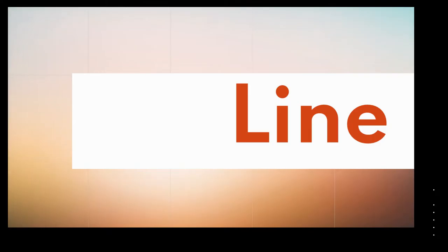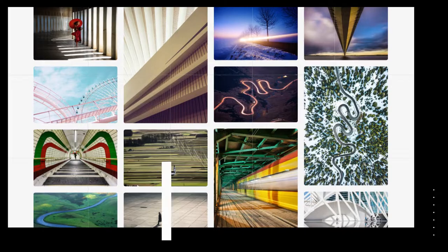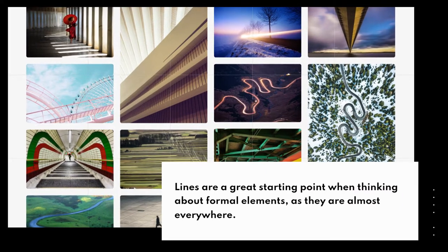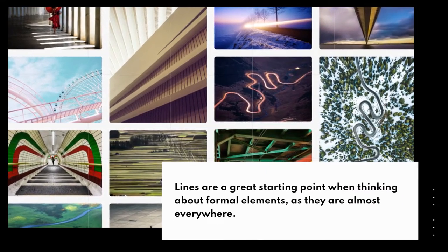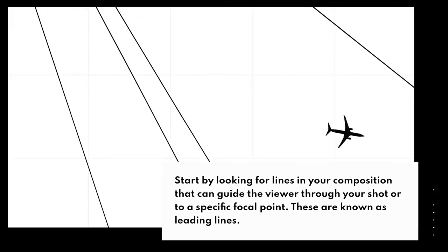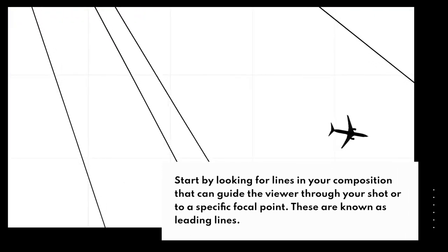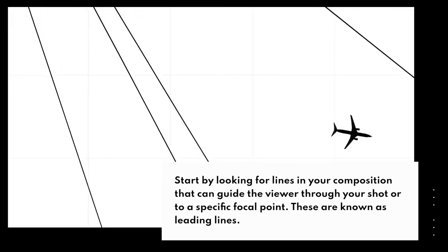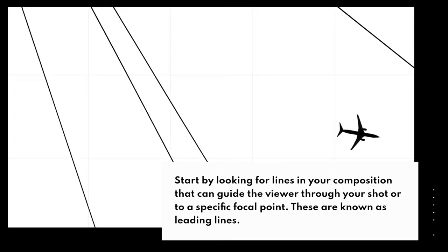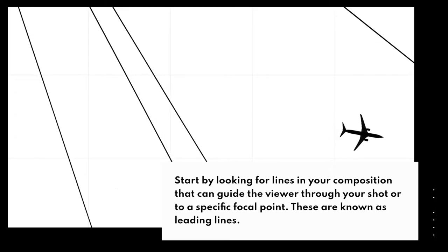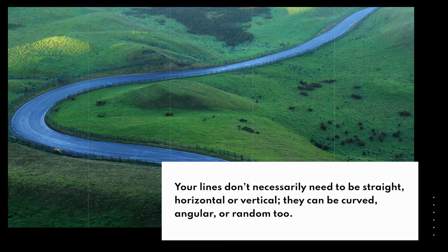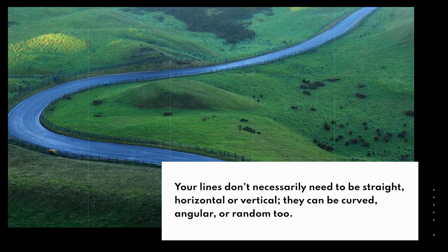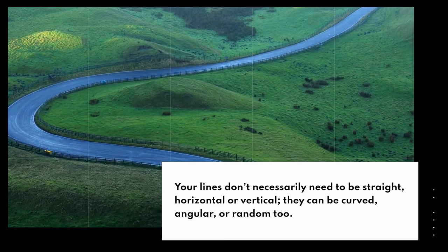Line. Lines are a great starting point when thinking about formal elements, as they are almost everywhere. Start by looking for lines in your composition that can guide the viewer through your shot or to a specific focal point — these are known as leading lines. Your lines don't necessarily need to be straight, horizontal, or vertical; they can be curved, angular, or random too.